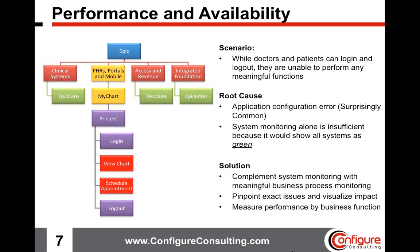Walking through this scenario, we'll do a comparison of traditional system monitoring and also tie in some business process monitoring elements. On the left-hand portion of the screen, we have a graphic of an EPIC application broken down to several sub-applications — things like clinical systems, PHRs, portals and mobile applications, access and revenue, and integrated foundation. We will be focusing on the MyChart application specifically. The main scenario is that doctors and patients can log into the MyChart application, but once logged in, they're unable to perform any meaningful functions. Under MyChart, we'll see that View Chart and Schedule Appointment are in red. So while the application is still up, there are issues within it and users aren't able to perform functions.